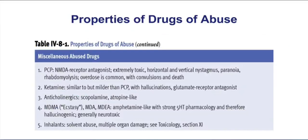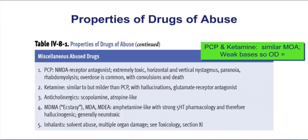At the bottom of this table, we have some miscellaneous abused drugs. Make sure and focus on the first two, which are PCP and ketamine. Both drugs are going to have a similar mechanism of action by blocking glutamate receptors. PCP can show up on your exam — recognize that the patient taking PCP is going to feel super strong, they're going to punch through windows and it's going to take multiple people to hold them down. They can experience horizontal and vertical nystagmus — their eyes are darting back and forth and up and down.